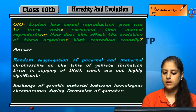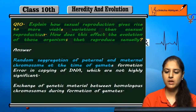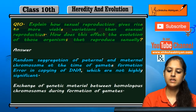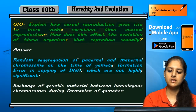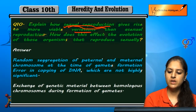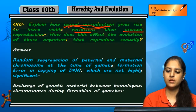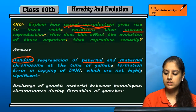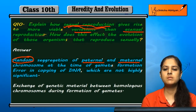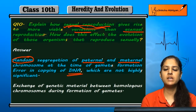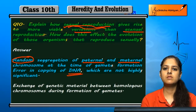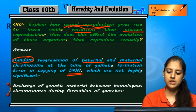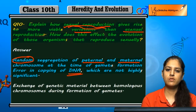The first reason is random segregation of paternal and maternal chromosomes at the time of gamete formation. There are also errors in copying of DNA, which are not highly significant. In sexual reproduction, paternal and maternal chromosomes are randomly segregated, and the DNA is presented with the same variations due to errors in copying and random segregation.